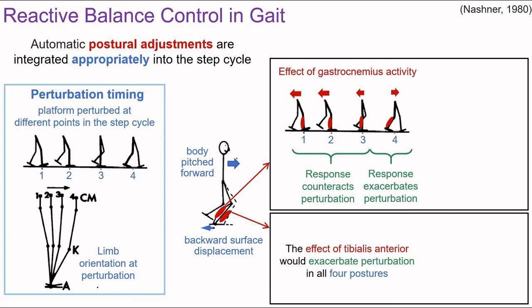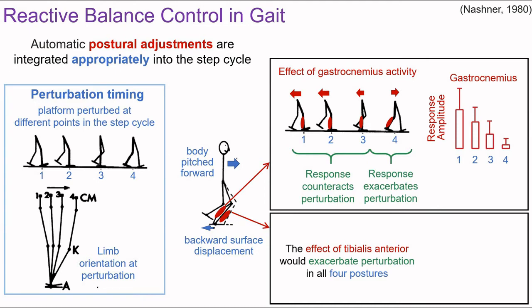Now let's think about the tibialis anterior. Its recruitment moves the center of pressure anteriorly, so when the body is pitching forwards, this would accelerate the forward motion and exacerbate the perturbation in all four postures. Looking at the actual response amplitudes, gastrocnemius responses are maximal when the activity is functional and minimal when dysfunctional — exactly as expected. Similarly, since tibialis anterior activation is dysfunctional in all conditions, its response amplitudes are minimal in all conditions.